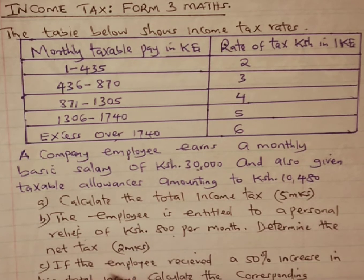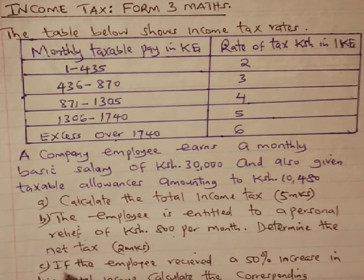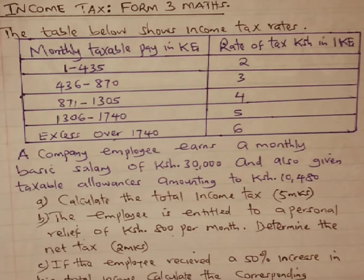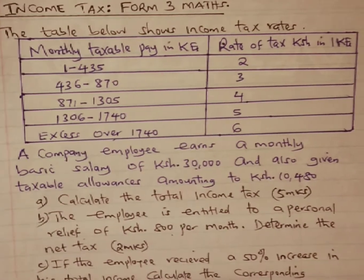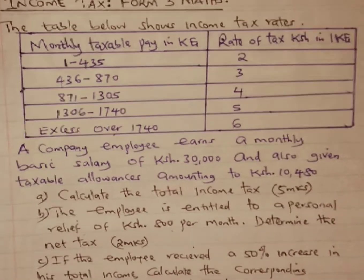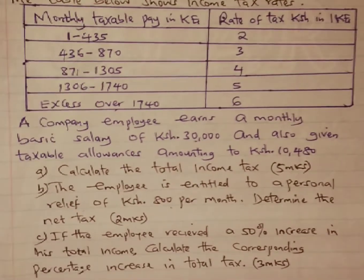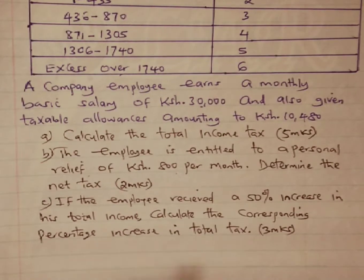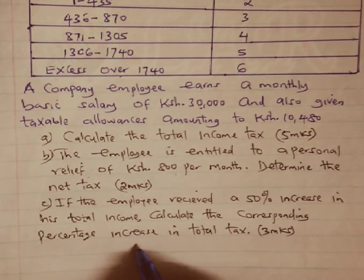Part (b) asks us to determine the net tax. Part (c) states: if the employee received a 50% increase in his total income, calculate the corresponding percentage increase in total tax — for three marks. Let us now look at the solution to this question.